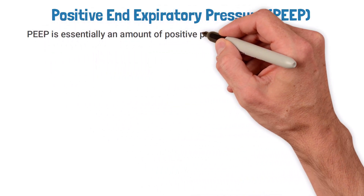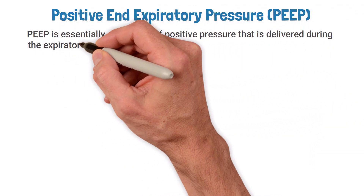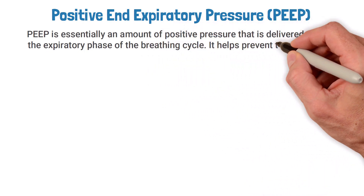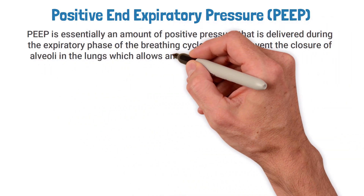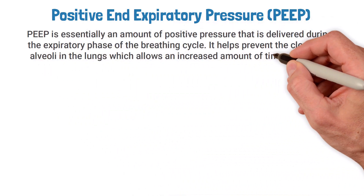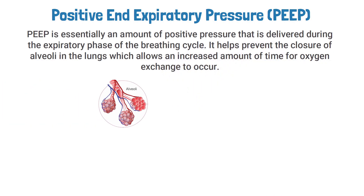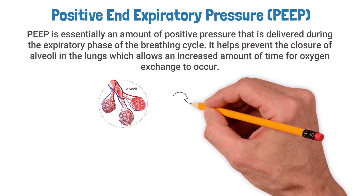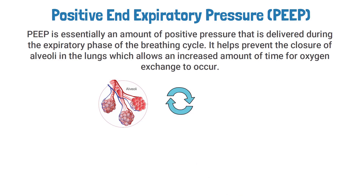PEEP is essentially an amount of positive pressure that is delivered during the expiratory phase of the breathing cycle. It helps prevent the closure of alveoli in the lungs, which allows an increased amount of time for oxygen exchange to occur. This is why PEEP is often recommended for patients with oxygenation issues.